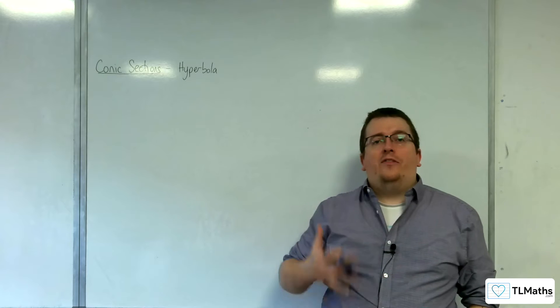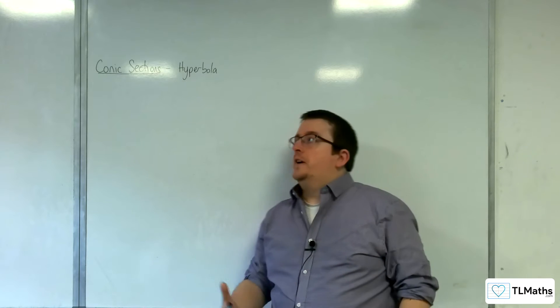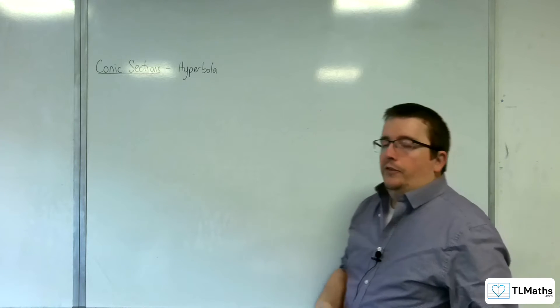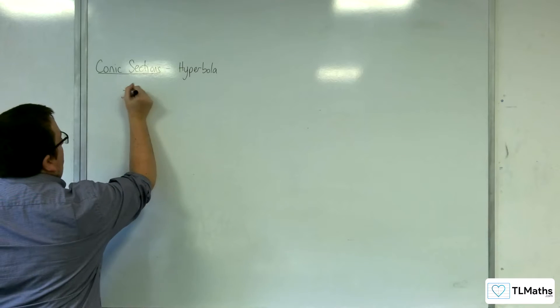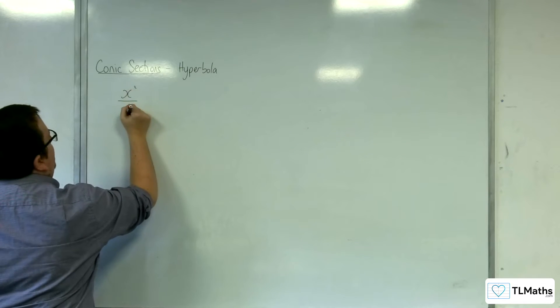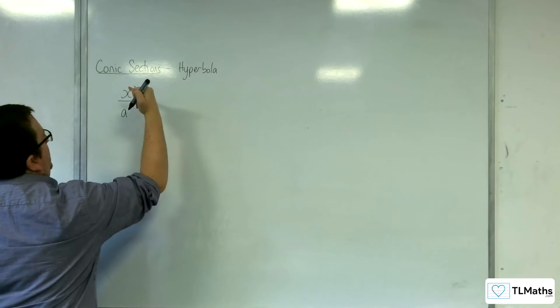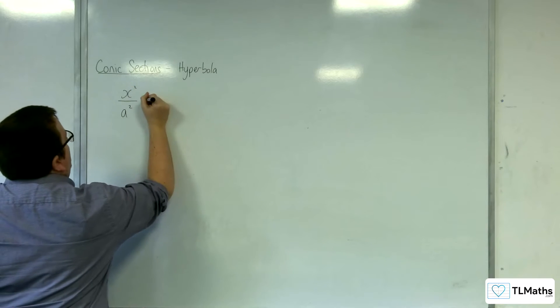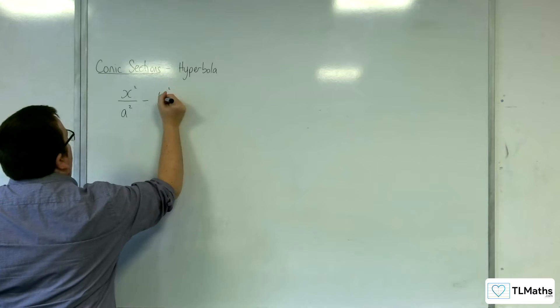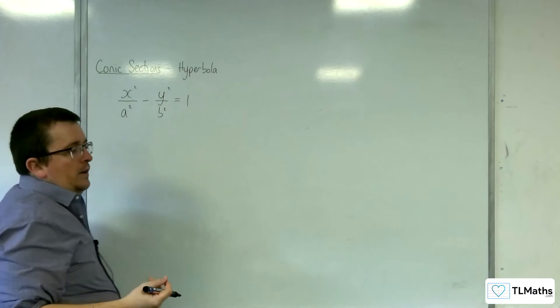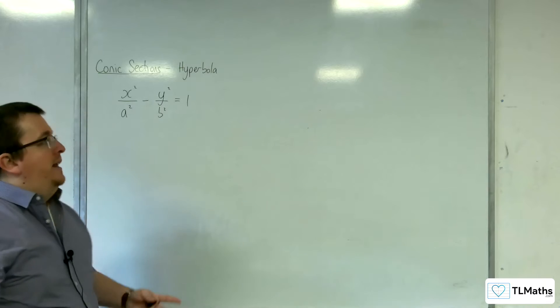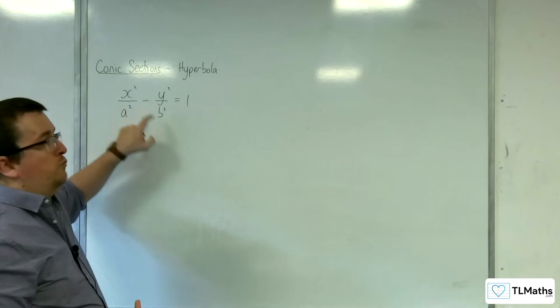In this video, we're going to look at the final conic section curve, and that's the hyperbola. The general form of the equation for one of these looks very similar to that of the ellipse. So it starts with x squared over a squared, and then we have take away y squared over b squared equals 1. So it's identical to the equation of the ellipse, apart from this is a minus rather than a plus.